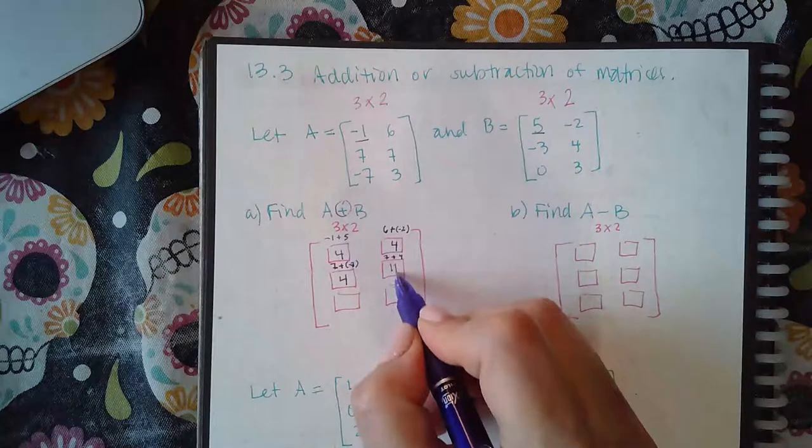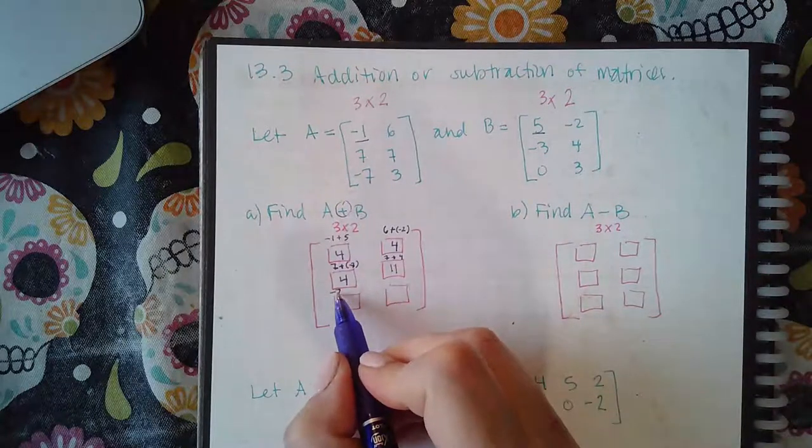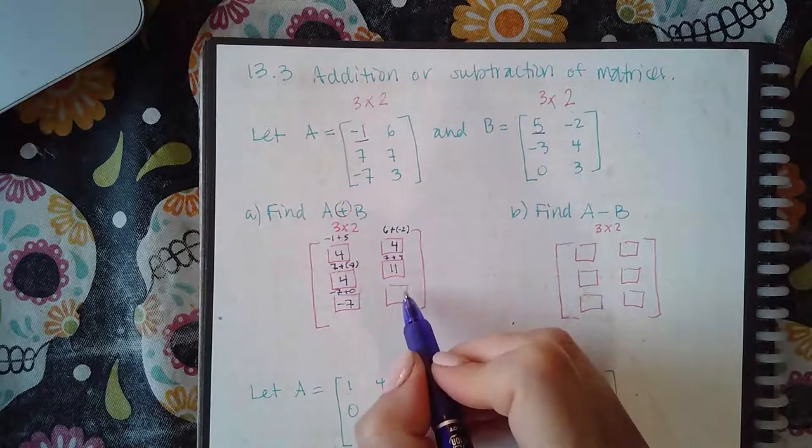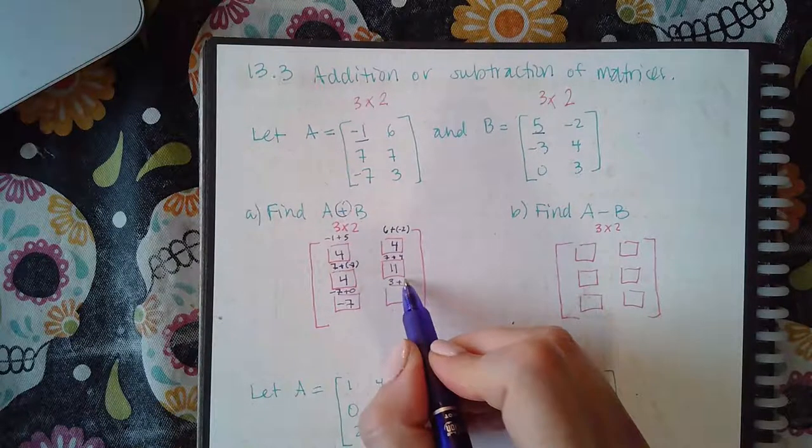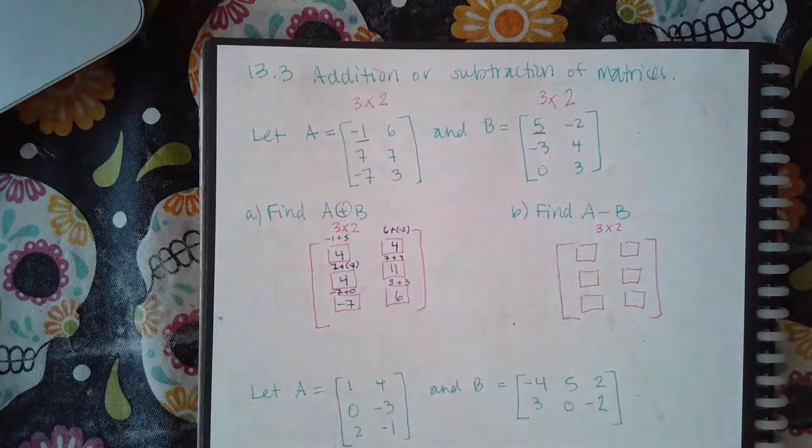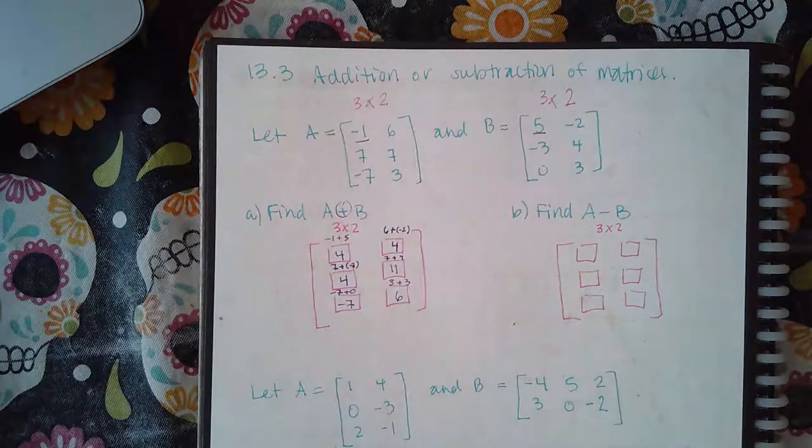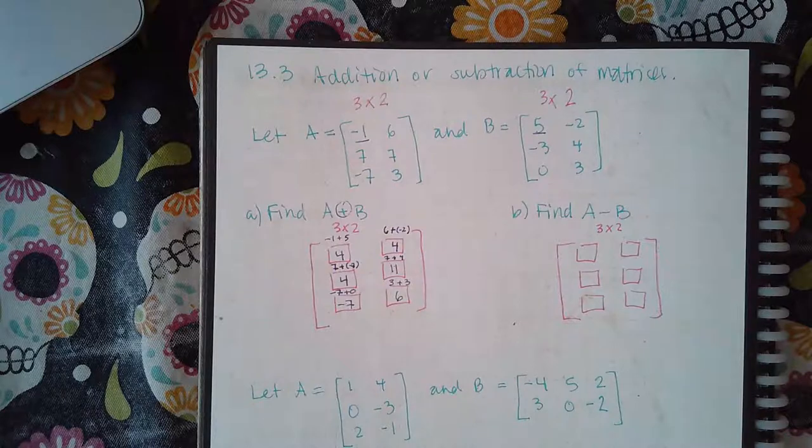This is going to be negative seven plus zero, which is negative seven. And this is going to be three plus three, which is six. Now, you don't need to write what I've written above it. I'm just trying to explain it, where I got the numbers from.